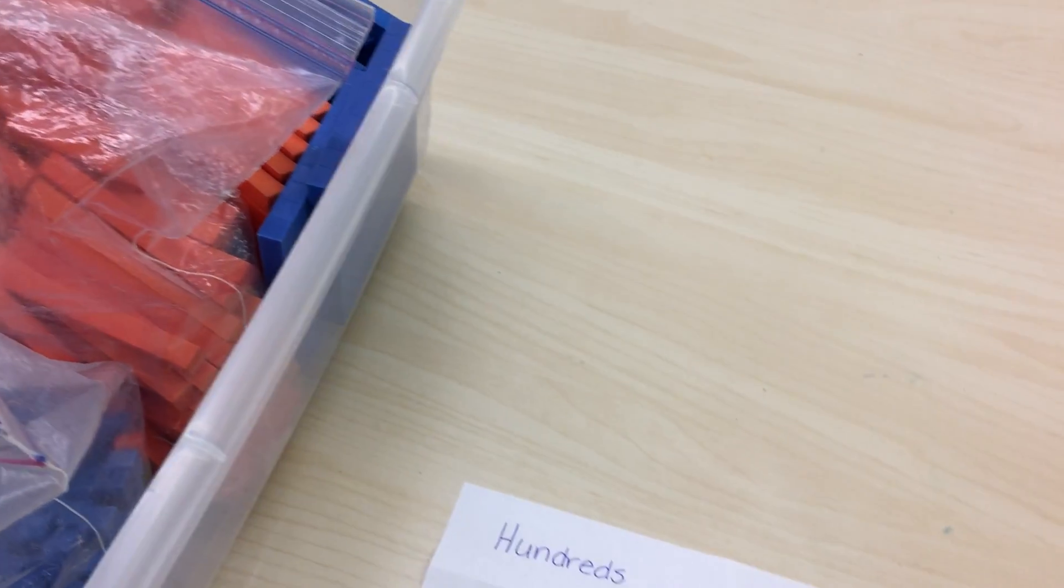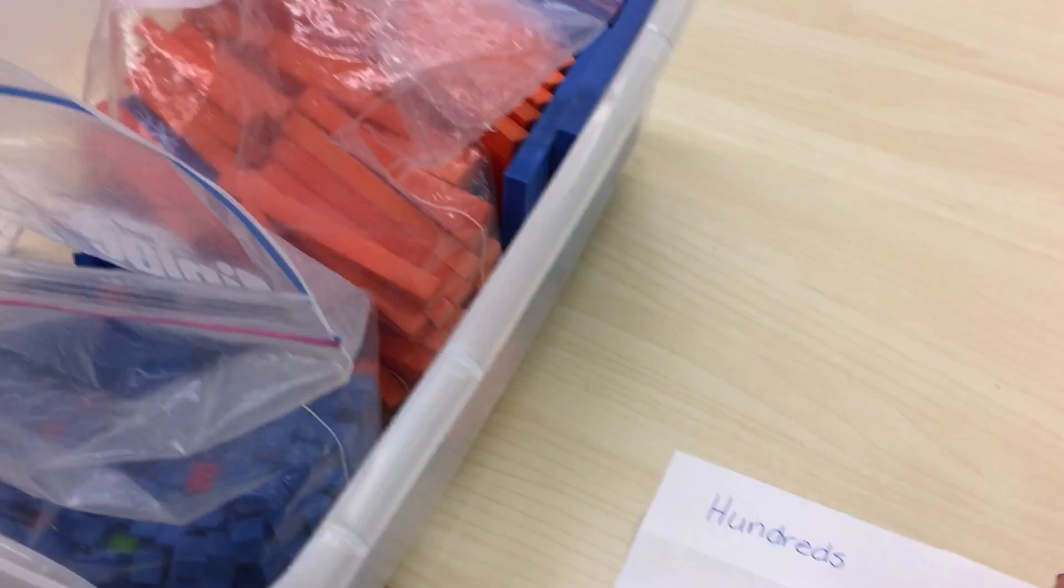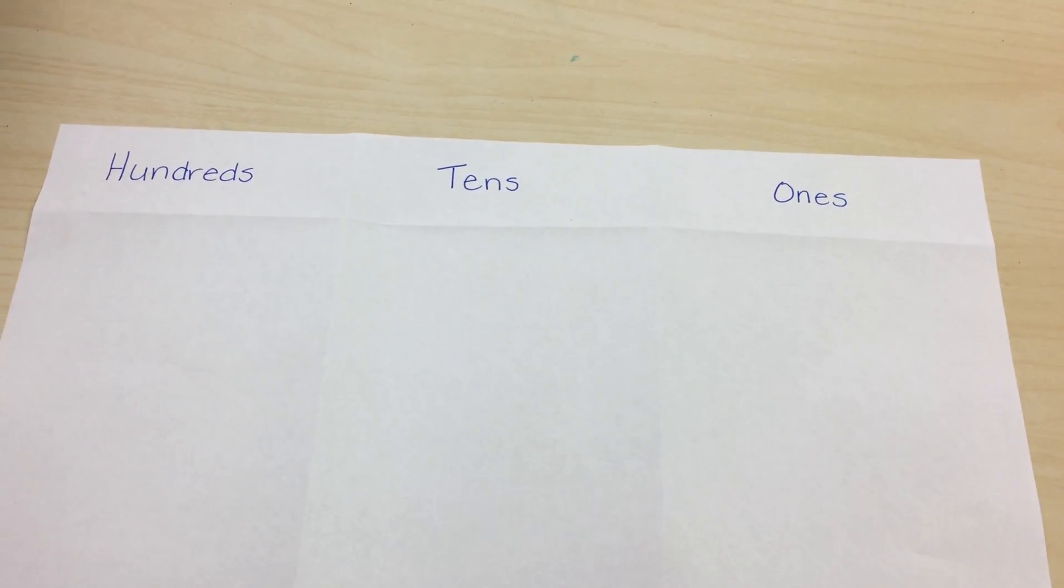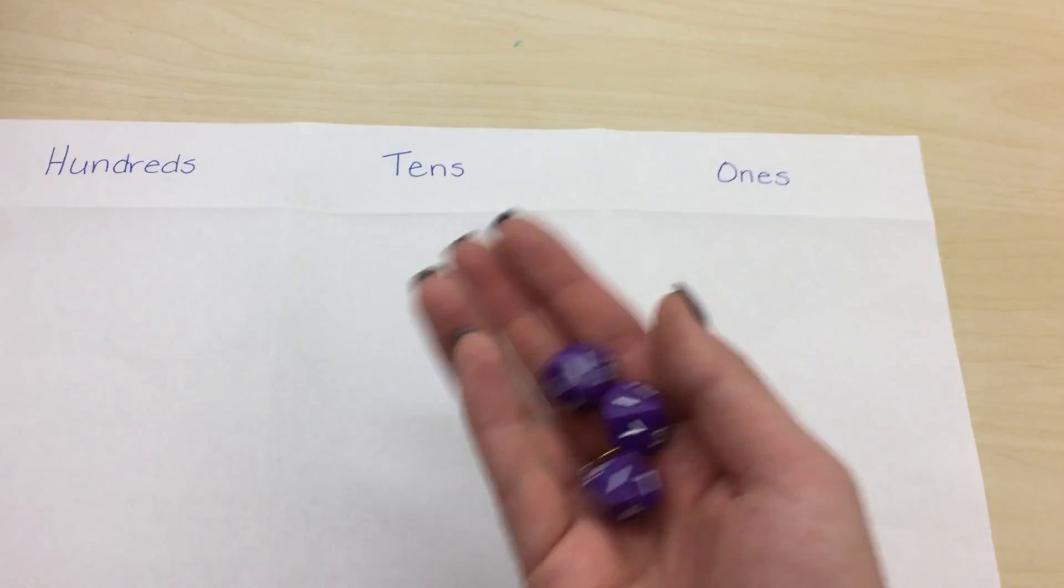Today I'm going to show you how to use dice, base 10 blocks, and a chart to build a three-digit number and represent it using base 10 blocks.